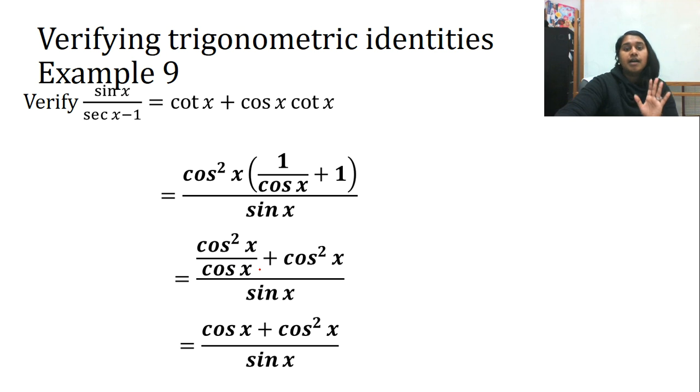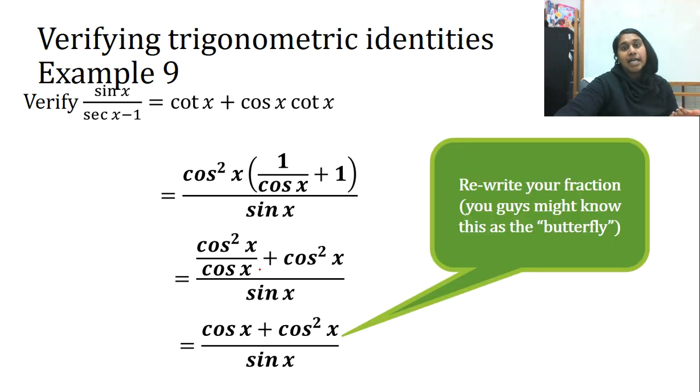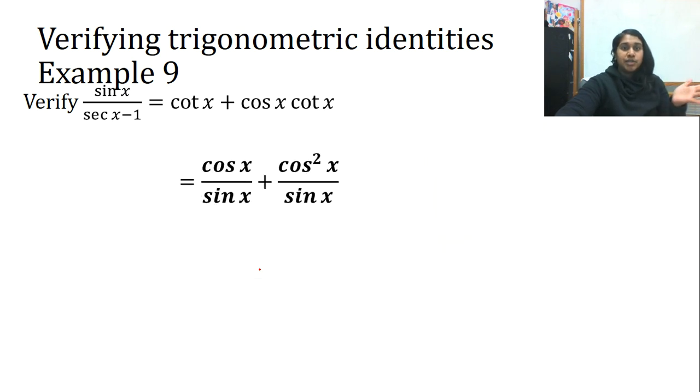And here is where a lot of kids might get stuck. But I would remind you, if you have a single value on bottom or like a single concept, something plus something or something minus something all divided by something, a least common denominator, then you can butterfly. It's the opposite of your LCD. So I butterfly it out. I end up with cosine x over sine x plus cosine squared over sine.